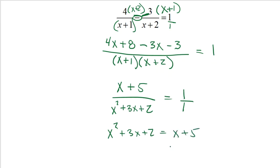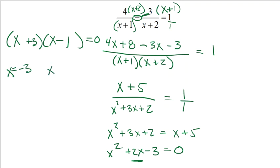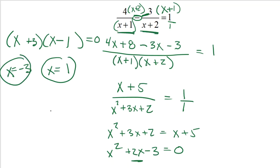It's a quadratic, so get a zero on one side: x squared plus 2x minus 3 equals 0. The only way to break apart x squared is x times x. I need 3 and 1, with 3 positive and 1 negative, giving 3x minus 1x, which is 2x in the middle. So x equals negative 3 or x equals positive 1. Neither makes the denominator 0, so both are valid answers.